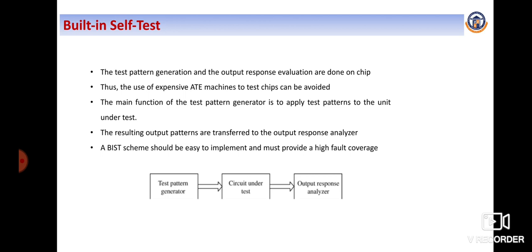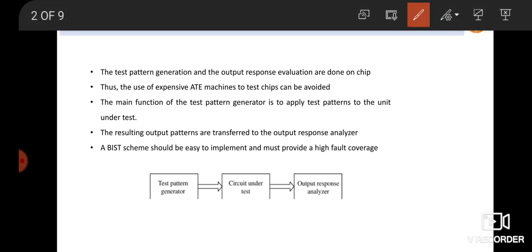What do you mean by built-in self-test? This is the general block diagram of the built-in self-test concept. This architecture has two kinds of blocks: test pattern generator and output response analyzer. The central portion is named as the circuit under test, that is CUT. Using this concept only we are going to test our circuit automatically — the chip itself. The test pattern generator generates the test pattern for the circuit, and the circuit output response is analyzed through the output response analyzer. This is called built-in self-test.